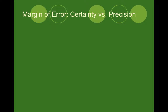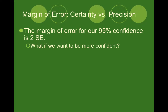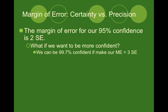Continuing talking about margin of error, we're going to look now at certainty versus precision. Our margin of error for 95% confidence is two standard errors — we take our standard error and multiply it by two. If we wanted to be more confident, we have to make our margin of error bigger. We could be 99.7% confident if we make our margin of error three times the standard error, so now instead of multiplying by two, we're multiplying by three, which makes our interval wider.